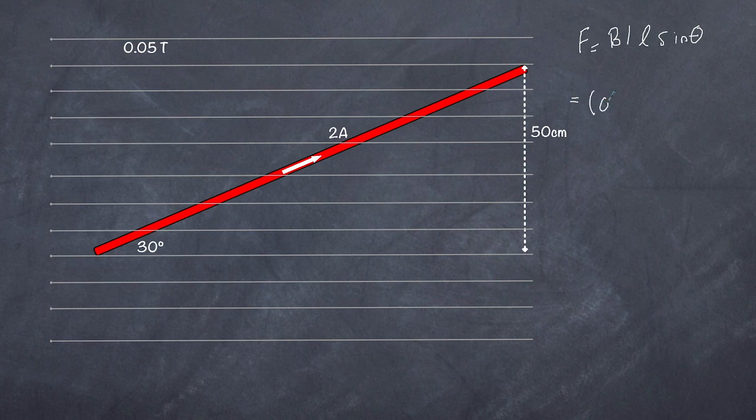Our B of course is 0.05. The current is equal to 2. Now at this stage I could try to work out L. Notice that L is not 50 centimeters. L is this side of it. And the good thing here is that L sine theta is actually the vertical component of the length of wire. So we can substitute straight away in the 50 centimeters, and of course that is 0.05 meters.